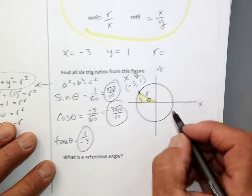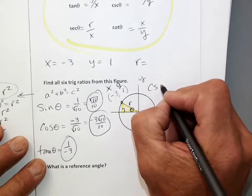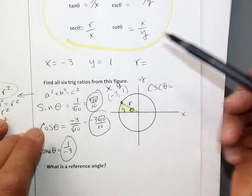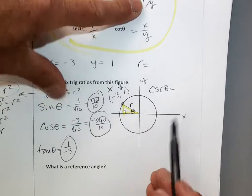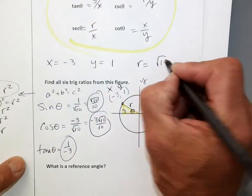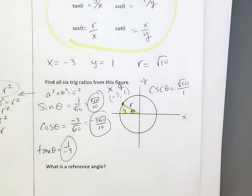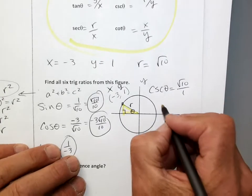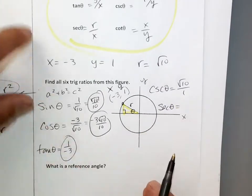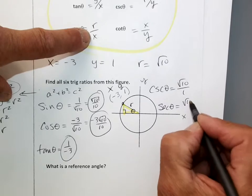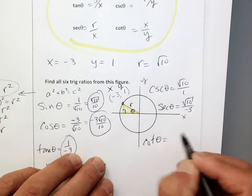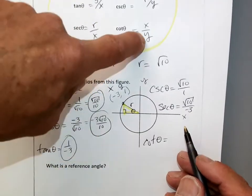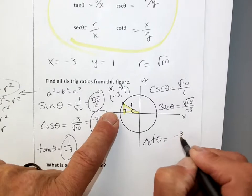Cosecant of theta: cosecant is r over y, and my r is square root of 10 over my y value which is 1, so just square root of 10. My secant value: secant is my r over my x — my radius is the square root of 10 and my x value is negative 3. So secant equals square root of 10 over negative 3. And finally, cotangent: cotangent is my x over my y — my x is negative 3 and my y is 1, so cotangent equals negative 3.